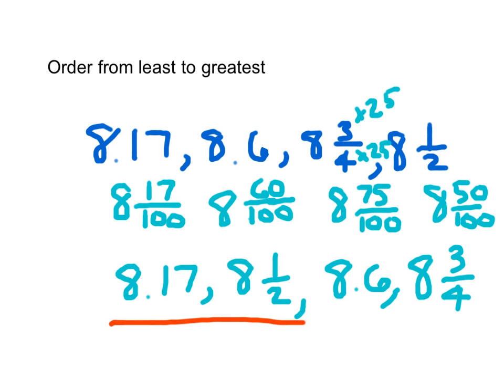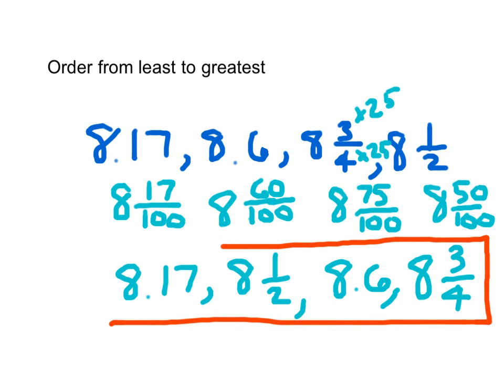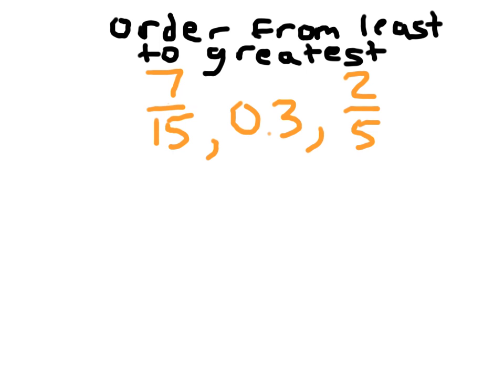Just choose whatever strategy you are most comfortable with. You can do it both ways and be really sure of your work. Here's another problem — order from least to greatest. There are only three numbers to order, and in this case we only have one number that's a decimal, so it would probably be easier to convert them all to fractions.